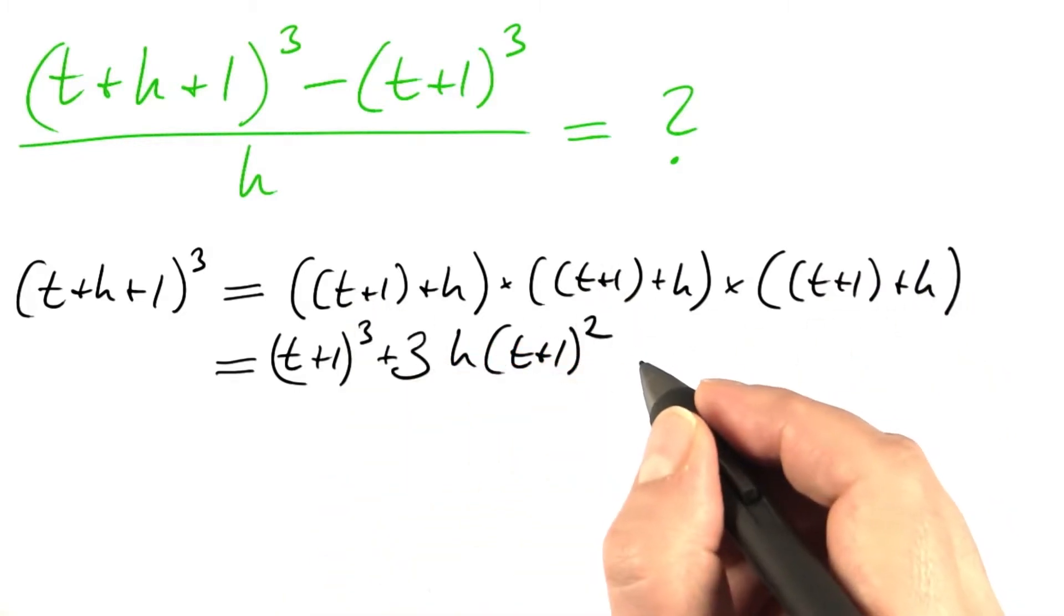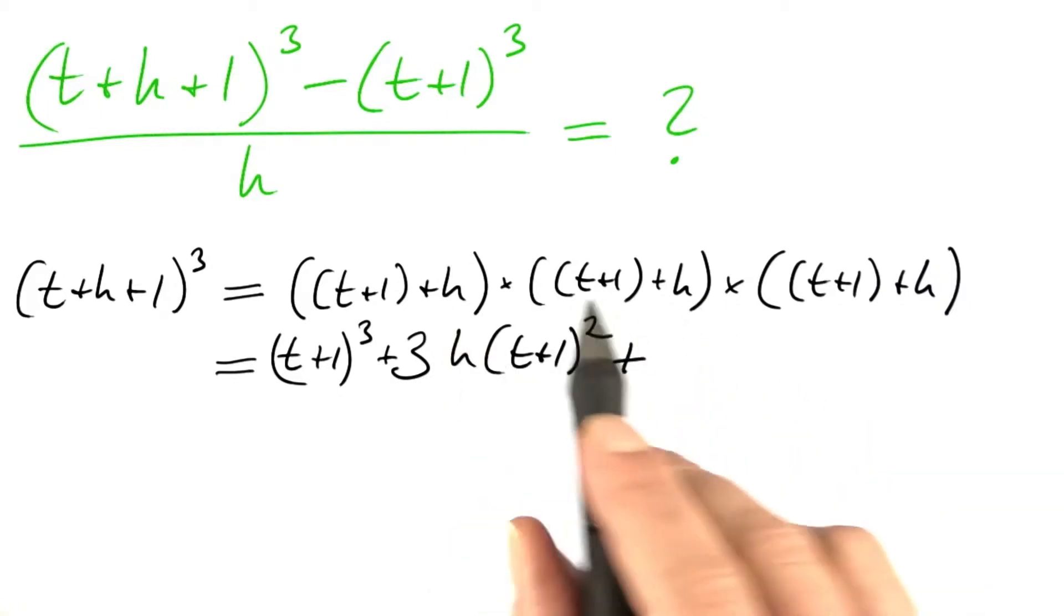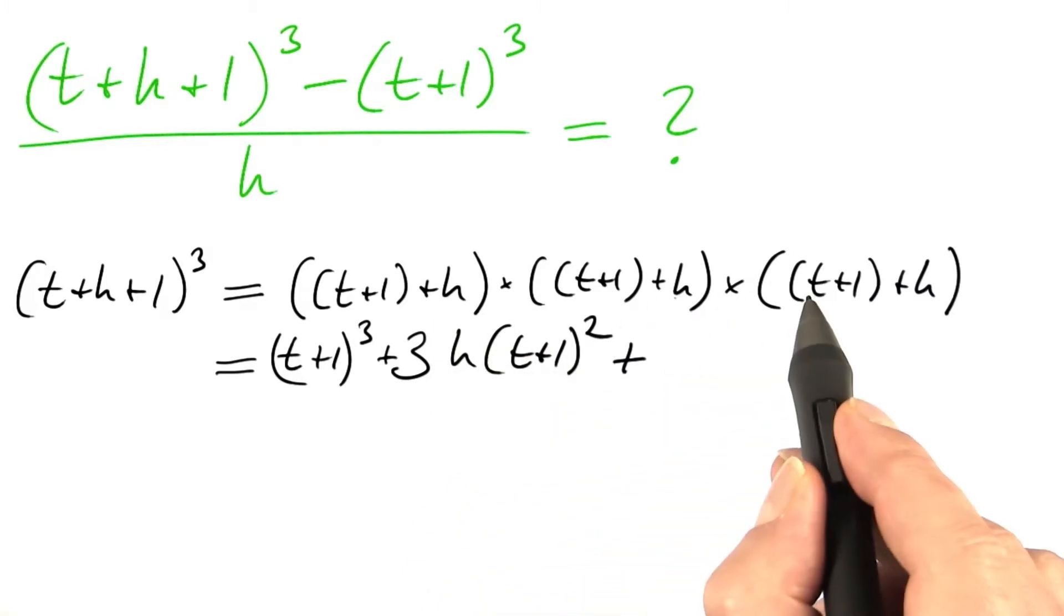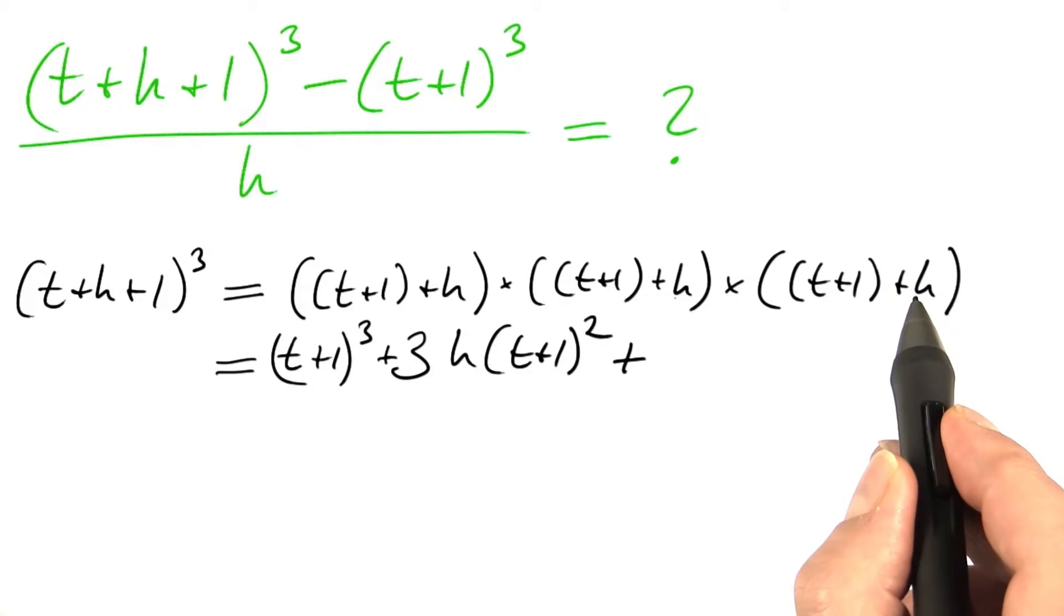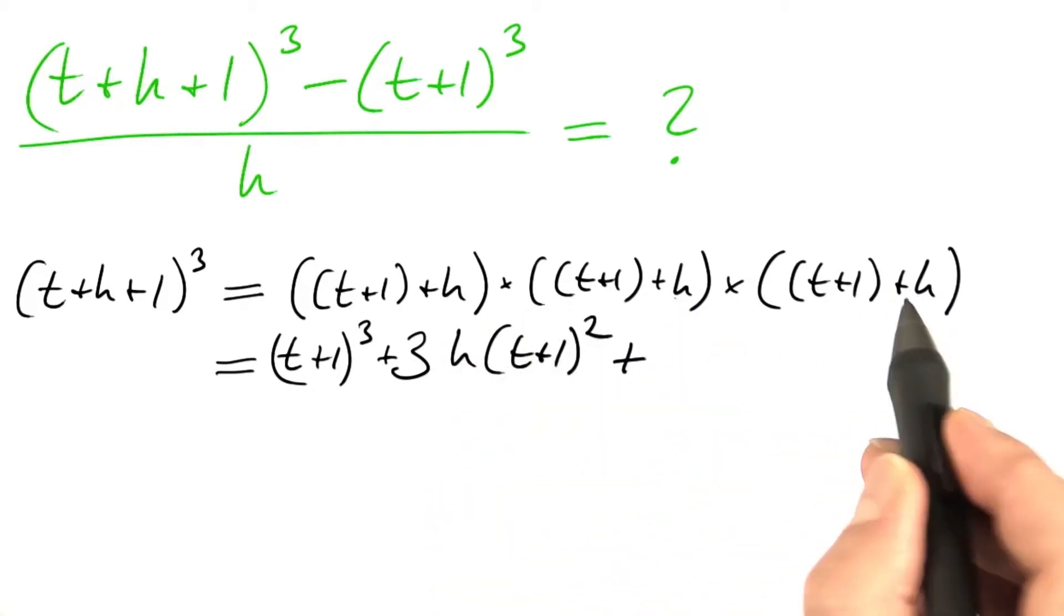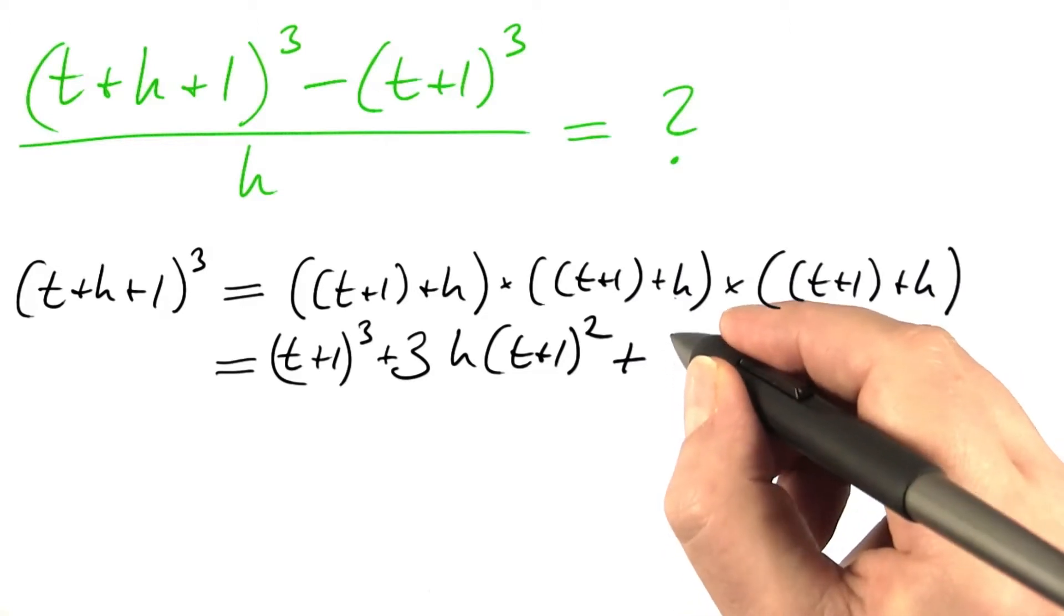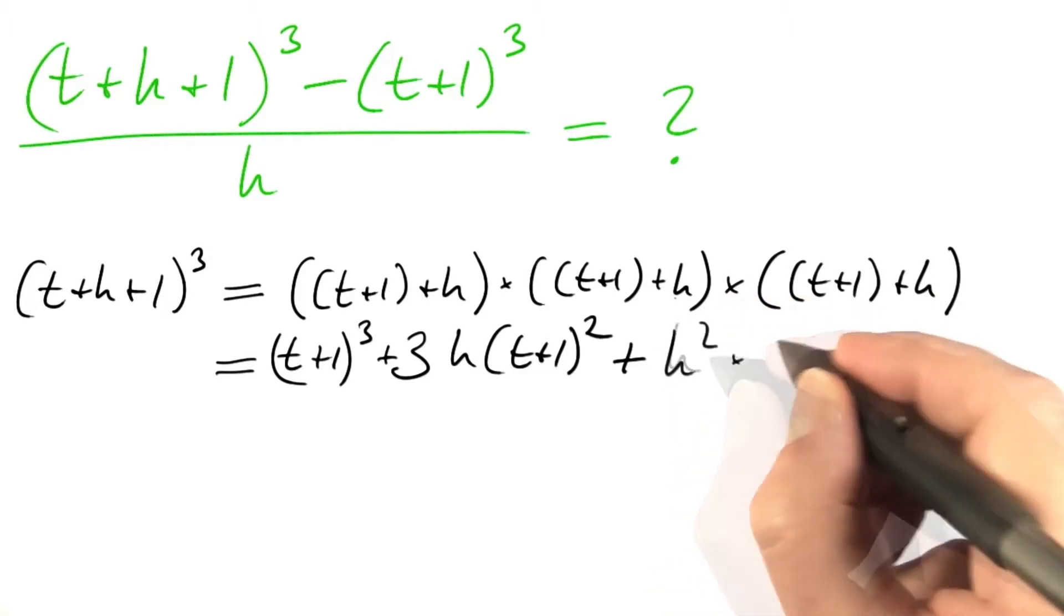Three terms of that type plus everything else has h square in it, h times h times t plus 1, or t plus 1 times h times h, or even h times h times h. So whatever happens to appear next is the square of h times something.